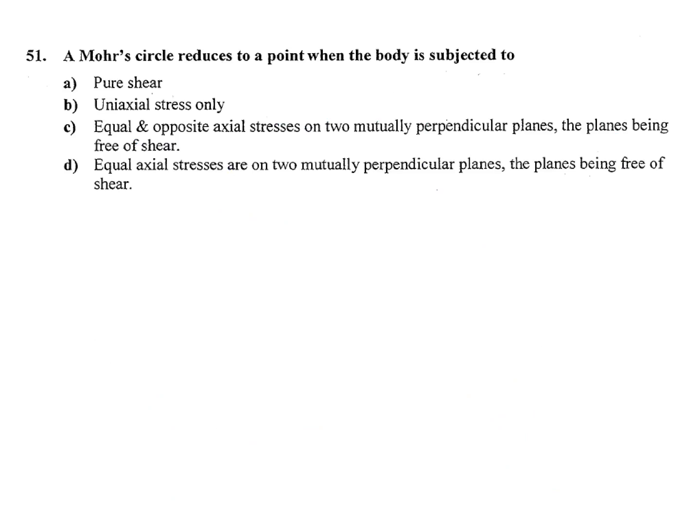Next question: A Mohr's circle reduces to a point when the body is subjected to? This one also asked in ISRO so many times, also in IES two or three times. Mohr's circle reduces to a point. Sigma X equals sigma Y equals sigma 1 equals sigma 2, all are same. Pure shear is not possible. Uniaxial stress means one side it will come like a circle.